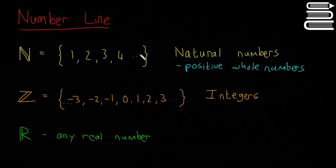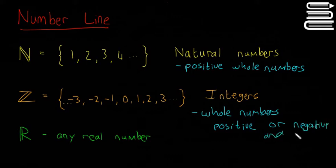The integers then is basically, so minus 3 etc., all the ones that are here, so it's a set of all of these numbers, and it's just whole numbers, whole numbers positive or negative and 0.